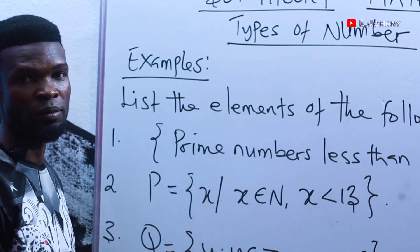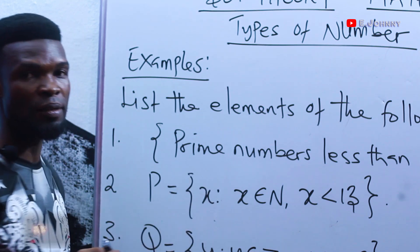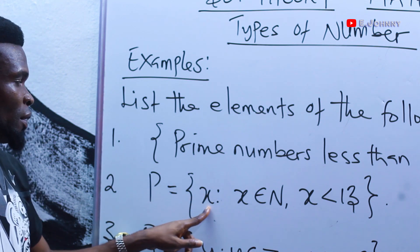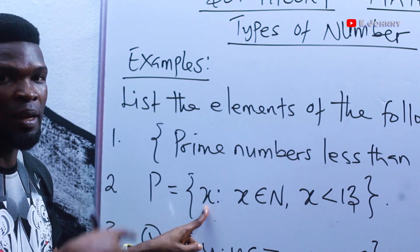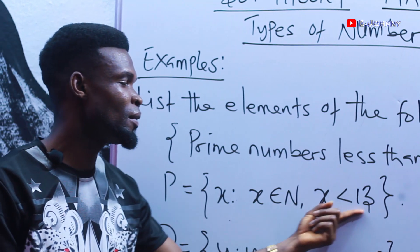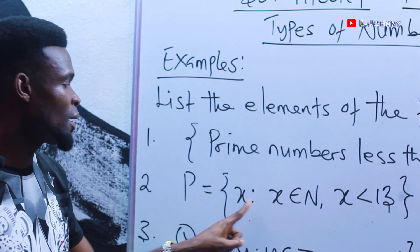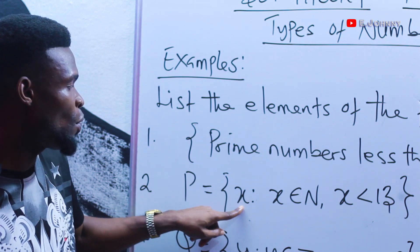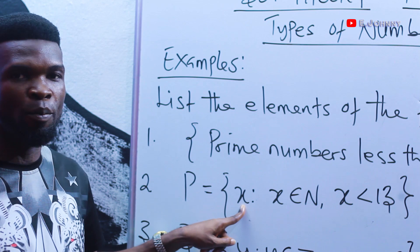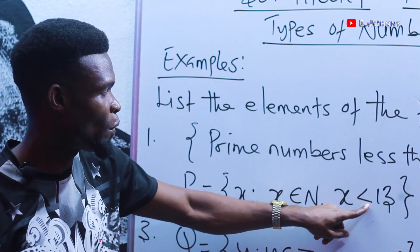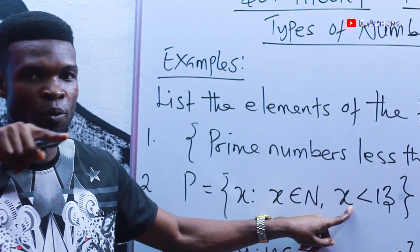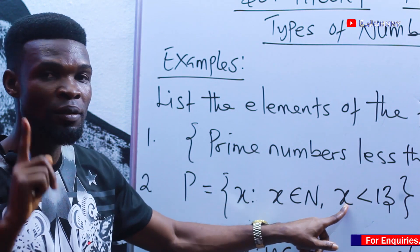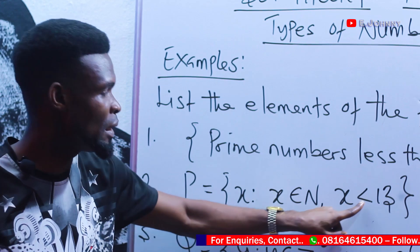The second one says that P is a set of x such that — some textbooks use a slash, but it means the same thing — such that x belongs to the set of natural numbers. So P is a set of x, where x is the element. This further explains that x belongs to natural numbers, meaning positive numbers. Since natural numbers start from 1, x is less than 13, so the elements start from 1 and end at 12.